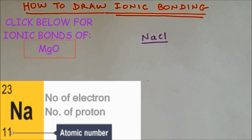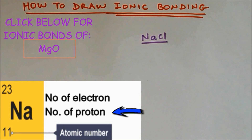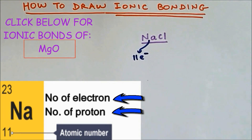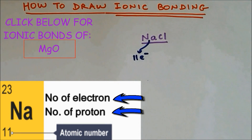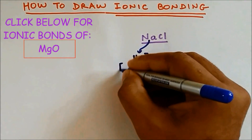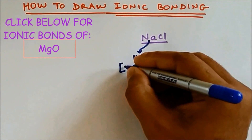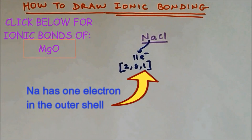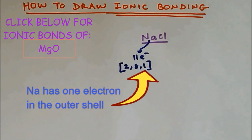For sodium, if you take a look at the atomic number in the periodic table, it is 11. So the proton number is 11, and therefore the electron number is also 11. The electron number is important because we have to write the electron arrangement. For sodium it is 2,8,1. So from this electron arrangement we can see that sodium has one electron in the outer shell.